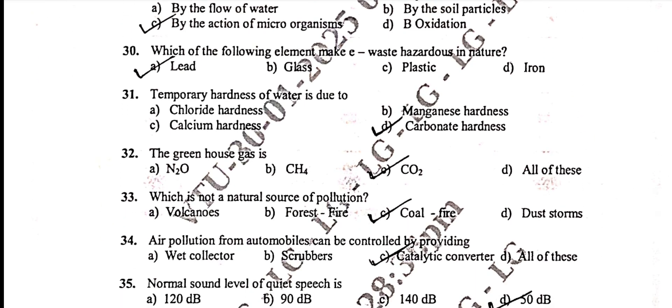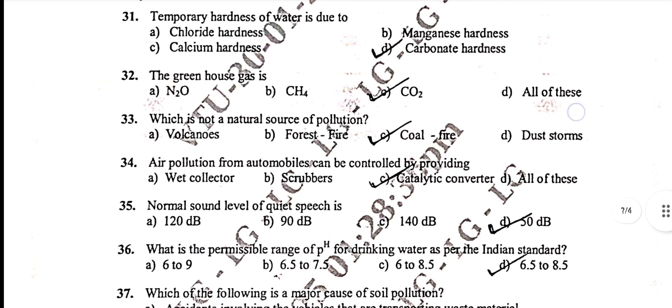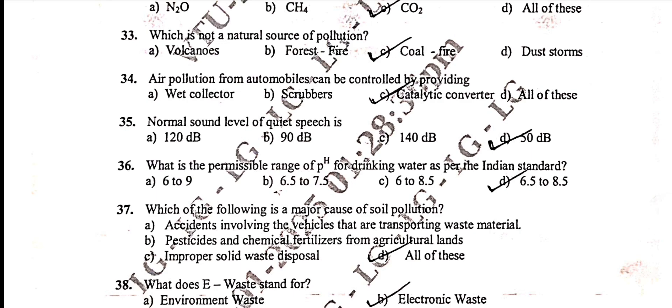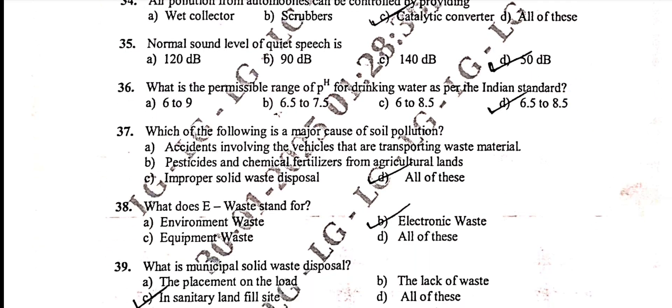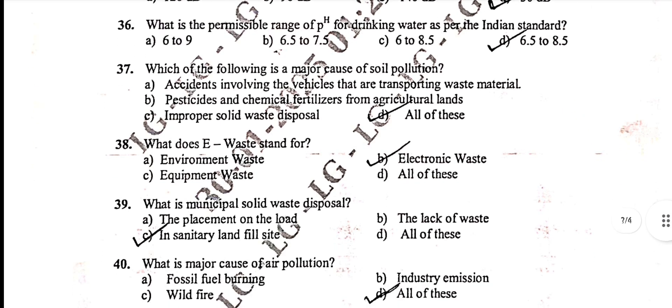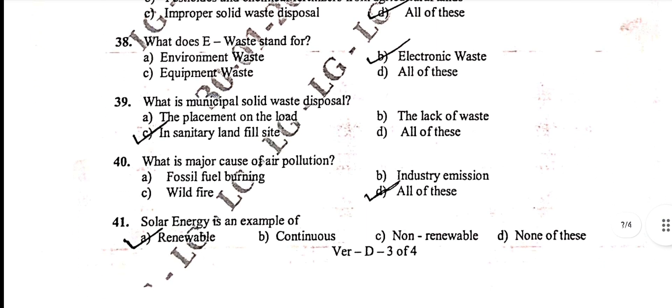Thirtieth question: option A — lead. Thirty-first: carbonate hardness. Thirty-second: CO2. Thirty-third: coal fire. Thirty-fourth: catalytic converter. Thirty-fifth: 15 dB. Thirty-sixth: 6.5 to 8.5. Thirty-seventh: all of these. Thirty-eighth: electronic waste. Thirty-ninth: option C — sanitary landfill.